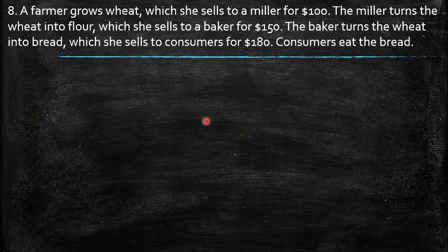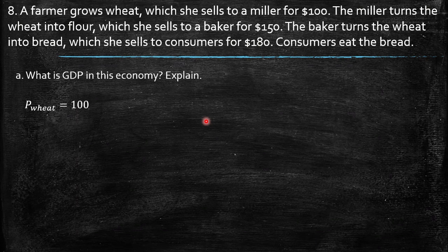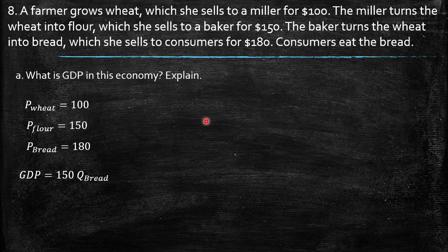The next question: a farmer grows wheat which she sells to a miller for $100. The miller turns the wheat into flour, which she sells to a baker for $150. The baker turns the wheat into bread, which she sells to consumers for $180. Consumers eat the bread. First, what is GDP in this economy? We know the price of wheat is $100, flour is $150, bread is $180. GDP should be $180 times the quantities of bread sold in that economy.